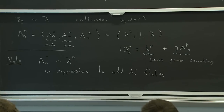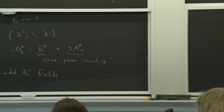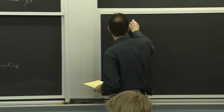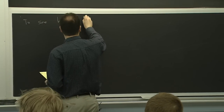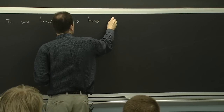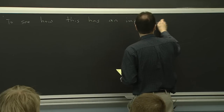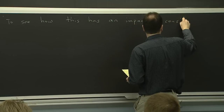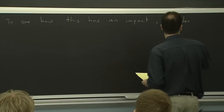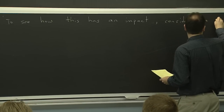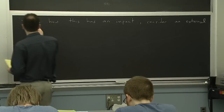So let's explore what happens when we do that. A priori you might think this is really bad, because you could have an infinite number of different operators at lowest order with a different number of these A_n-minus fields. We'll see that things are actually not so bad, but it's best to do that by way of an example.